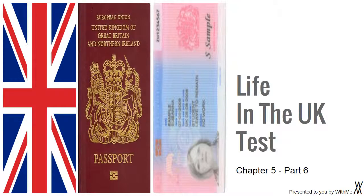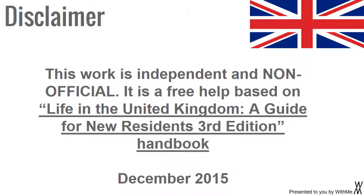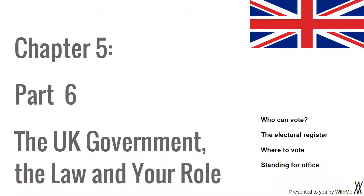Life in the UK Test, Chapter 5, Part 6. Disclaimer: this work is independent and non-official. It is a free help based on Life in the United Kingdom: A Guide for New Residents, 3rd Edition handbook, December 2015. Chapter 5, Part 6: The UK Government, the Law and Your Role. Topics covered: Who Can Vote, The Electoral Register, Where to Vote, and Standing for Office.